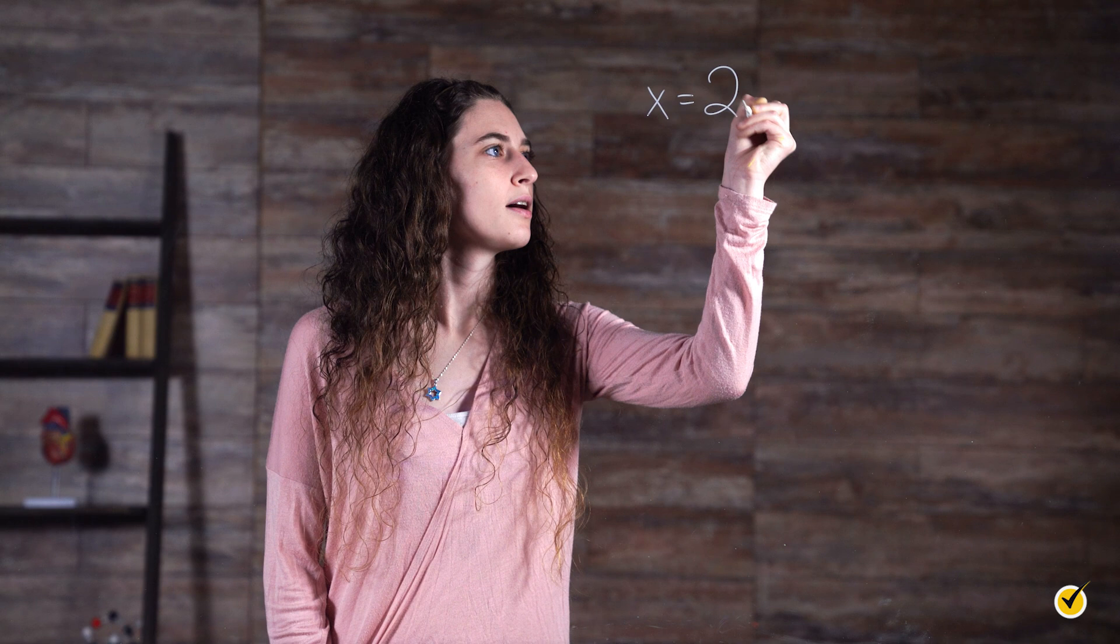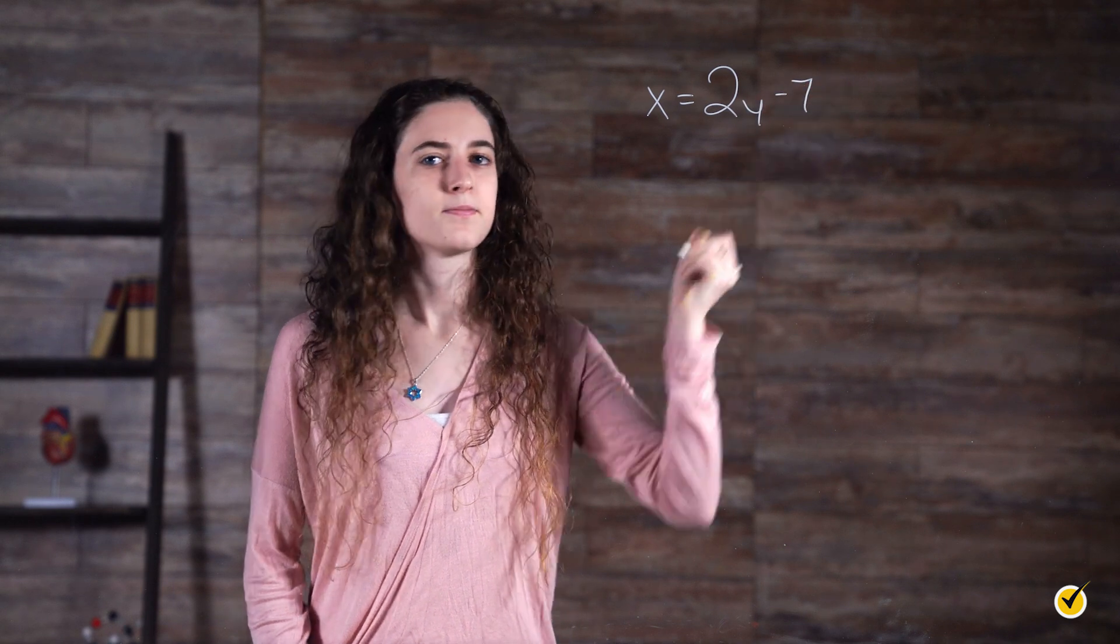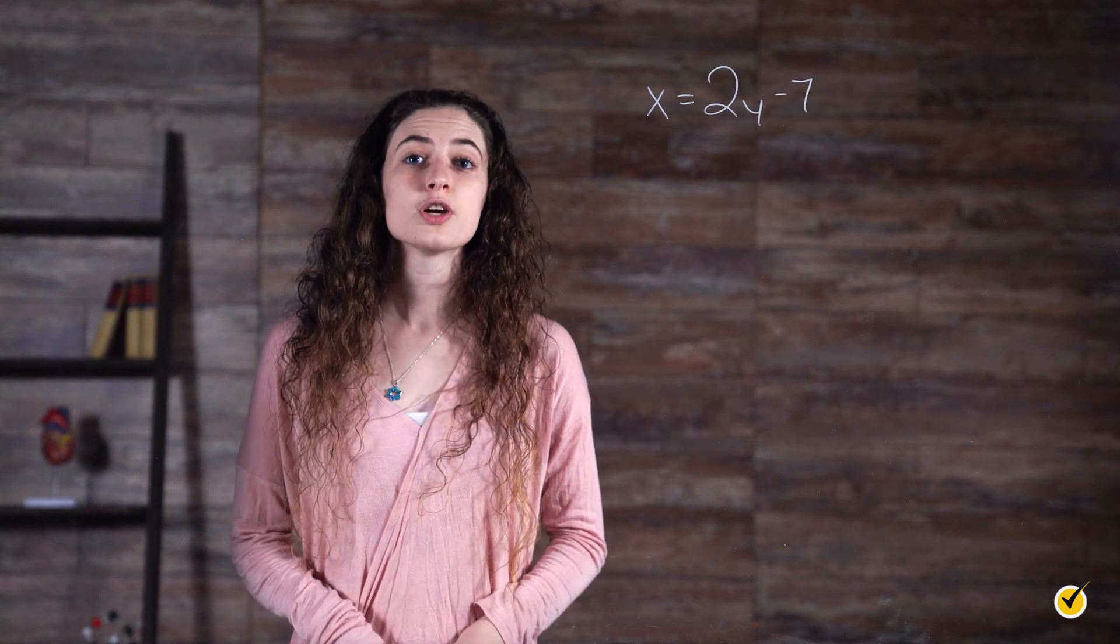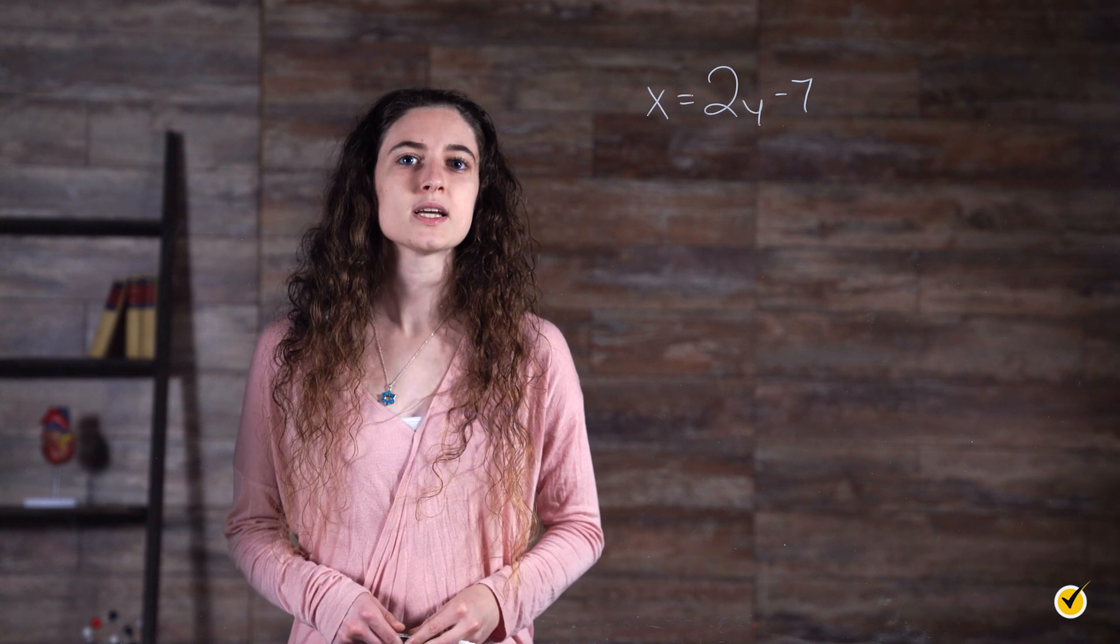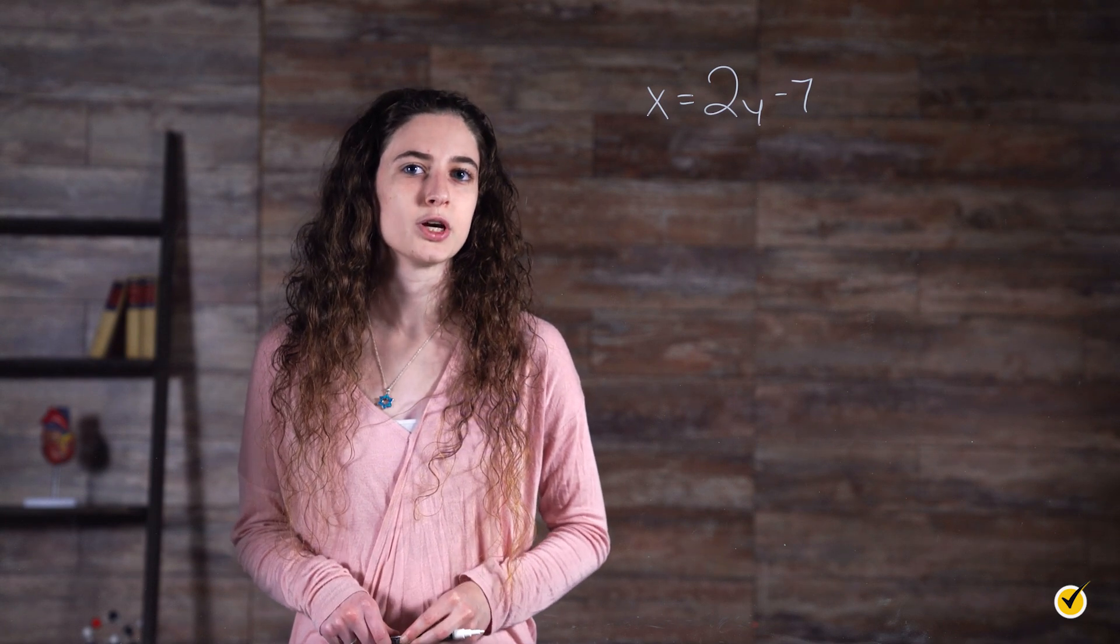x equals 2y minus 7. When we are looking for slope-intercept form, we want to get the y variable by itself on the left side of the equation.